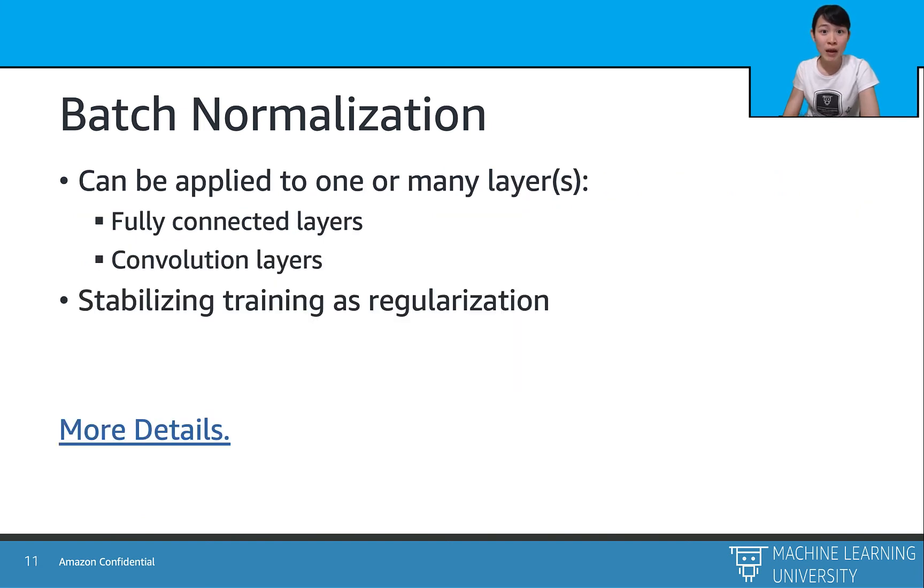So we can apply a batch norm layer after each layer, no matter it is a convolutional layer, or a fully connected layer. And the main functionalities of batch norm is to stabilize training the weights within each mini-batch.